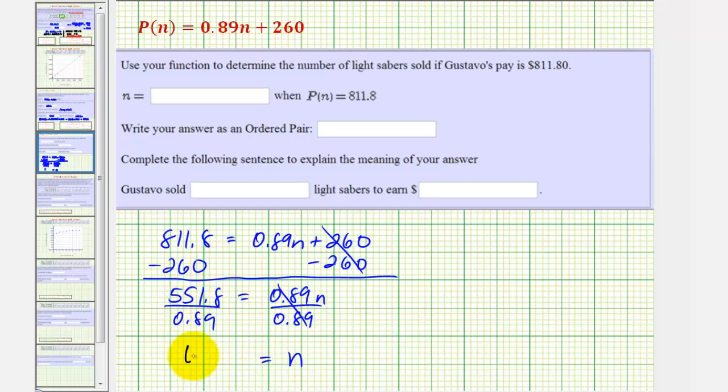This gives us n equals 620. As an ordered pair, remember the input is first, so we have 620 comma 811.8. Which means Gustavo sold 620 lightsabers to earn 811 dollars and 80 cents.